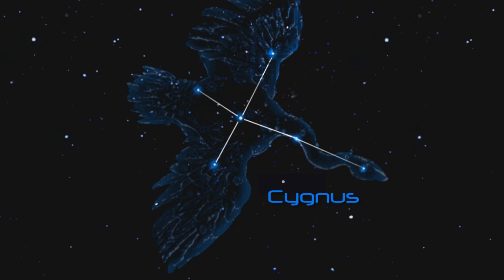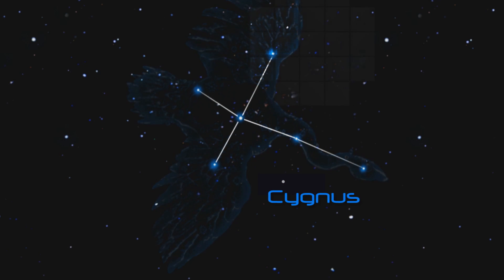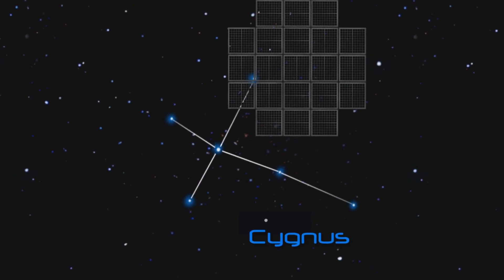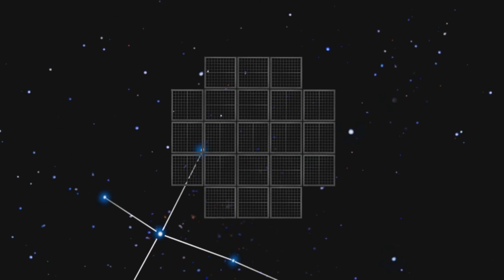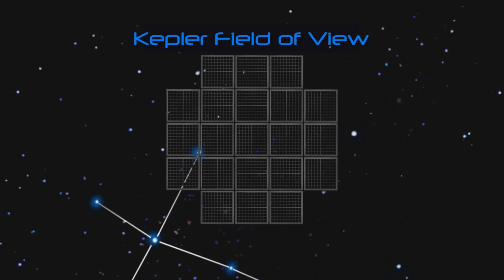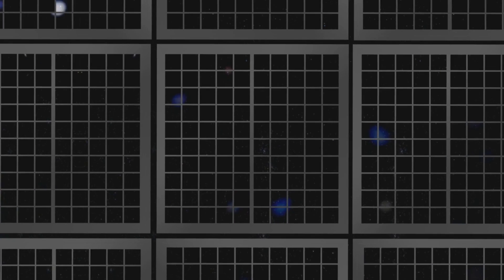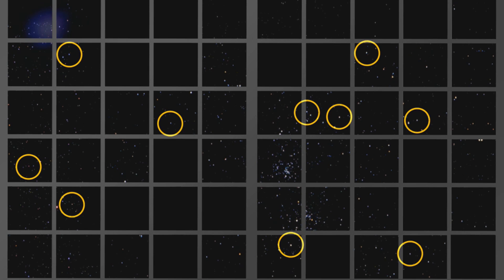Kepler focused its gaze on the area of sky marked by this grid of squares near the constellation Cygnus. For four years, the telescope's detectors focused on this area and studied over 150,000 stars.